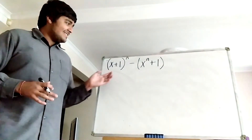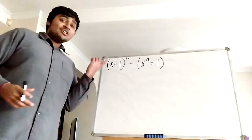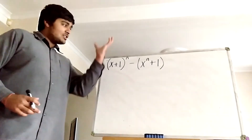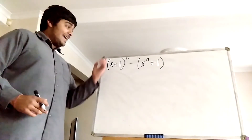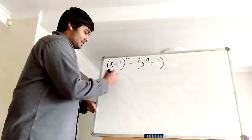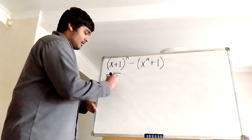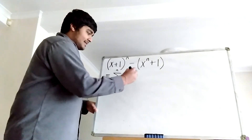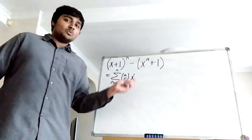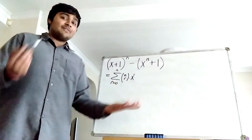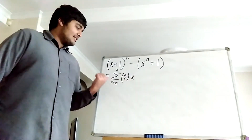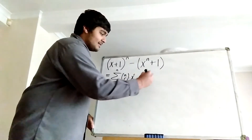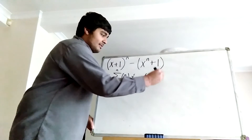Before we get stuck into things, let's simplify this polynomial using the binomial theorem. So we can write this in terms of each of the powers of x up to n. This is just the sum from r equals 0 to n of n choose r times x to the r — and technically times 1 to the n minus r, but of course 1 to the power of anything is 1 — minus x to the n, minus 1.